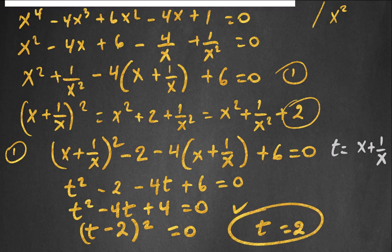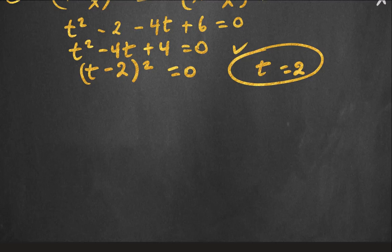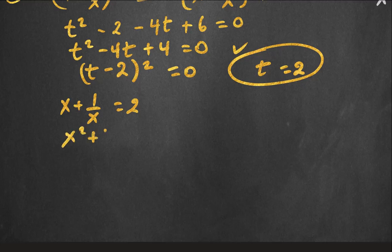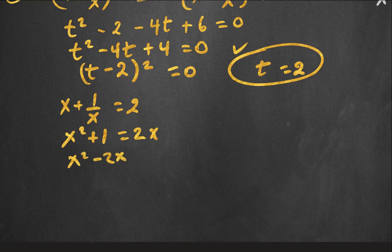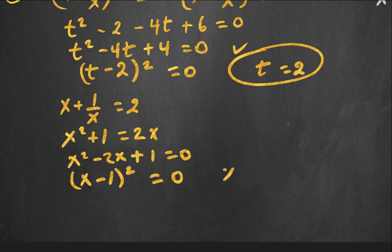Going back to the value of t, we know that t is equal to x plus 1 over x. So we get x plus 1 over x is equal to 2. Getting a common denominator, we get x squared plus 1 is equal to 2x, or x squared minus 2x plus 1 is equal to 0. We know that x minus 1, squared, equals 0, yielding x is equal to 1.